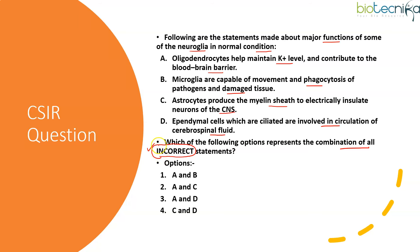This is very important — when rushing through the question, we forget it is asking about incorrect statements and tend to select the correct ones. You need to know the characteristics of each neuroglial cell. Oligodendrocytes help maintain the myelin sheath for neurons of the central nervous system — they are not related to the blood-brain barrier. So statement A is incorrect.